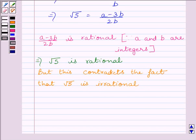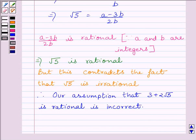Our assumption that 3 plus 2 root 5 is rational is incorrect. So, we conclude that 3 plus 2 root 5 is irrational.